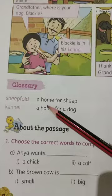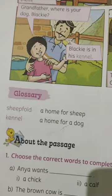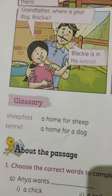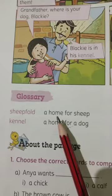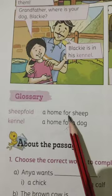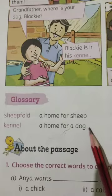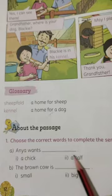About the passages — here we have a glossary. First word: 'sheepfold.' Sheepfold means a home for sheep — वह जगह जहाँ पर भेड़ रहते हैं, भेड़ का घर। Second word: 'kennel' — a home for a dog. Dog के लिए घर।